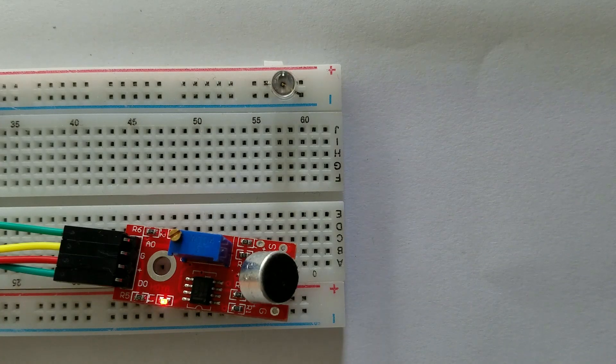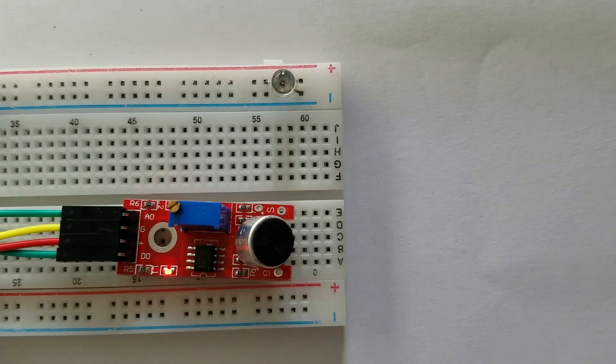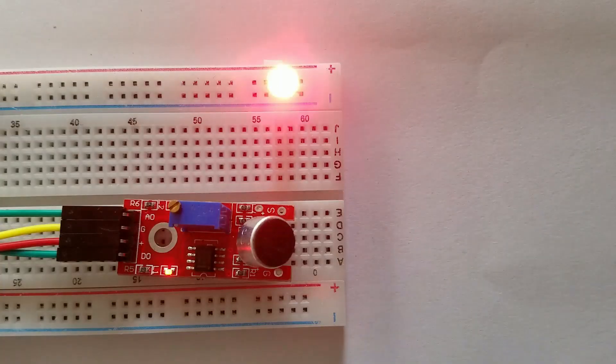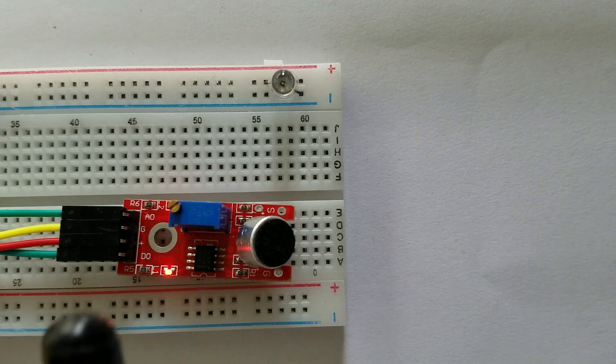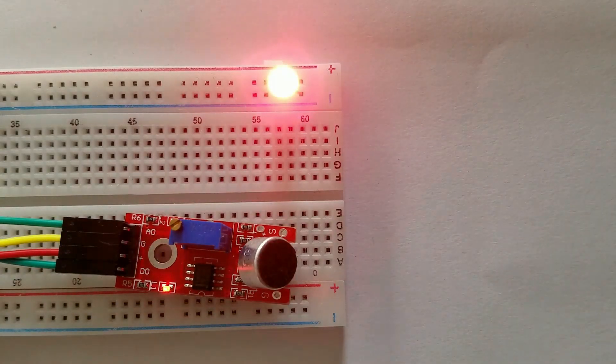In normal state, the digital output that this module will give will be high. But when the sensor detects something, the digital output that the module will give will be low.